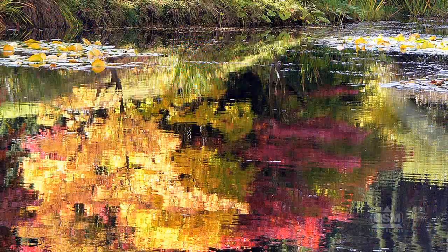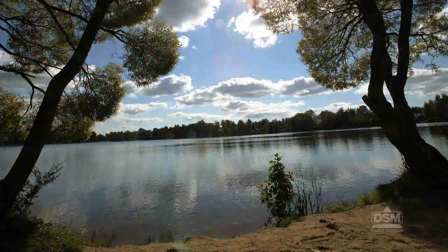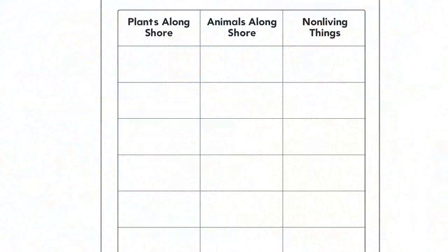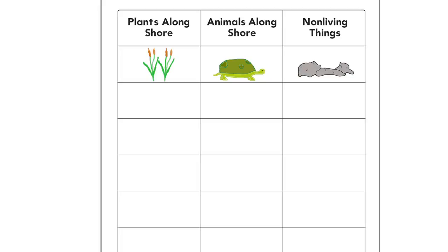Divide the class into teams of four and distribute the materials. Next, allow students to begin observing their surroundings. Ask students: is the water still or is it moving? The water in ponds should be still. In larger lakes, the wind may cause the water to lap gently at the shore, but the water is generally still. Then instruct students to draw pictures of what they see on their activity sheets. Plants should be recorded in the first column, animals in the second column, and non-living things in the third column.